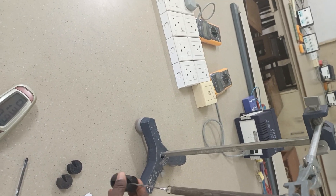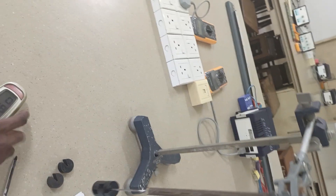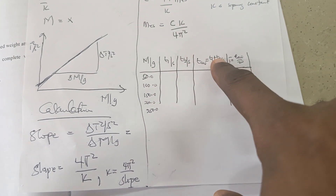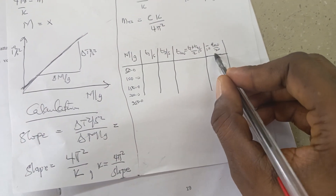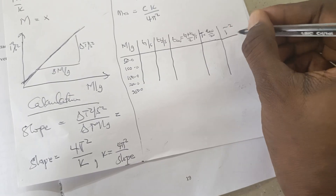We increase the mass by another 50 grams to 150 grams, then do t1 and t2. Then increase to 200 grams and do t1 and t2. That's how you get the values. The table will have columns for mass, t1, t2, the average, and then the average squared. We divide the average by the number of oscillations to get the period T, then get T².